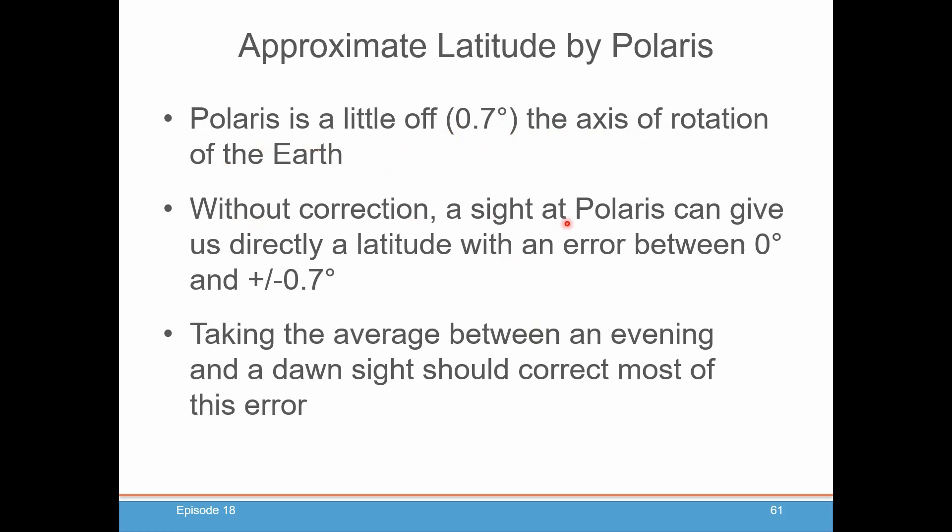So without any corrections, a sight of Polaris currently in the 2020s will give us a latitude with an error somewhere between 0 and plus or minus 0.7 degrees. That's about 40 minutes of latitude. Now, one way you can get around this is if you're able to take a sight on Polaris in the morning twilight and in the evening twilight, Polaris will basically be on opposite sides of its error. And if you take the average of those two sights, you'd get pretty close to eliminating that approximation and get pretty close to the actual latitude.